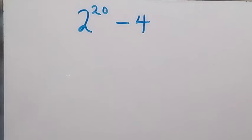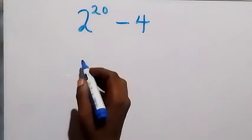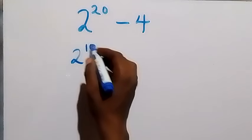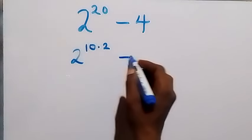Hello, you are welcome here. Let's solve this nice math problem. We have 2 raised to power 20 minus 4. We can equally write this as 2 raised to power 10 times 2, minus 4 here as 2 squared.